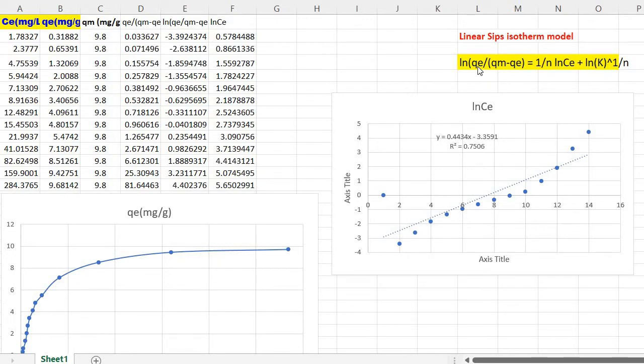Where QE is the amount adsorbed at equilibrium, QM is the maximum adsorption capacity, N is the SIFS model exponential, CE is the equilibrium concentration, and K is the SIFS isotherm model constant.